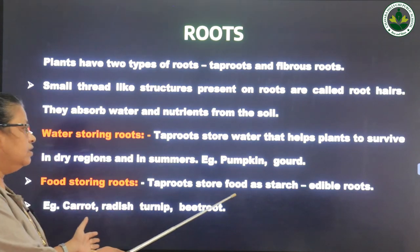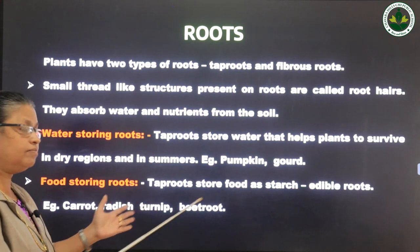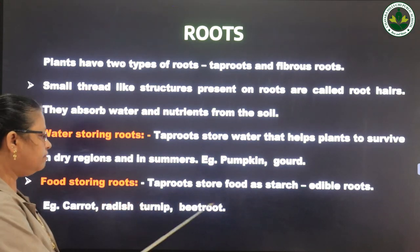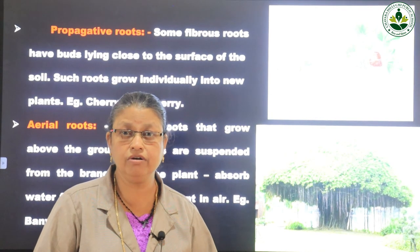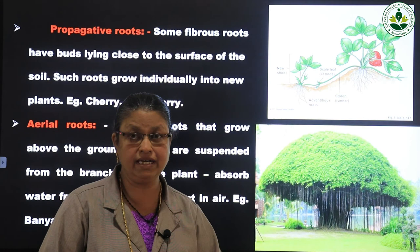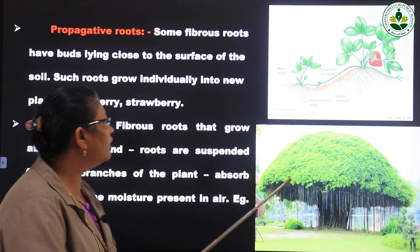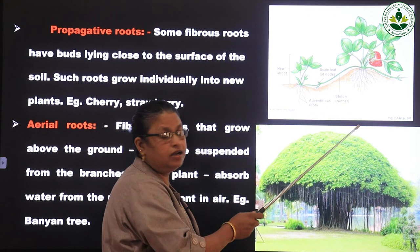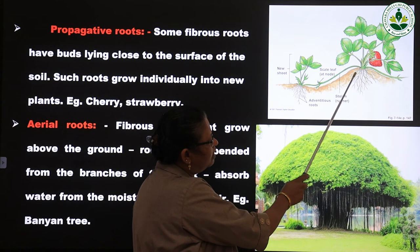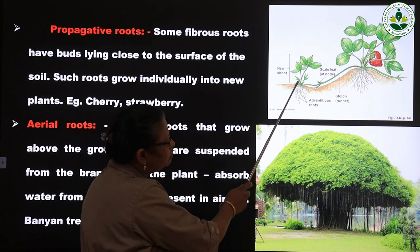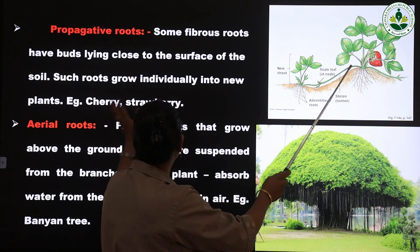The next one is propagative roots, which come under fibrous roots. Propagative roots have buds lying in the roots. For example, cherries and strawberries grow close to the surface of the soil, and from these buds new plants will grow. If you look at the picture of strawberry, you can see the roots originate from the base of the stem, and new buds are forming which grow into a new plant.